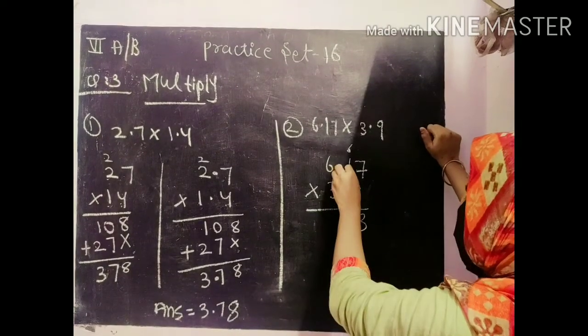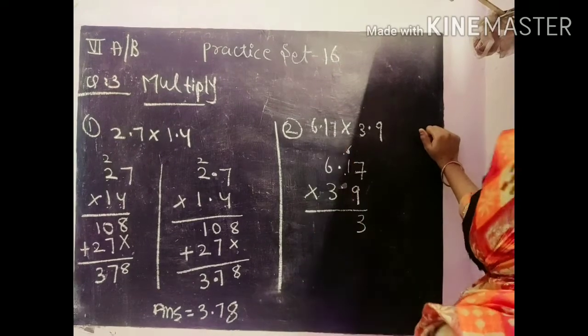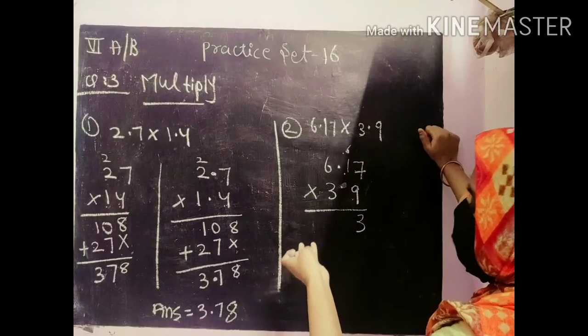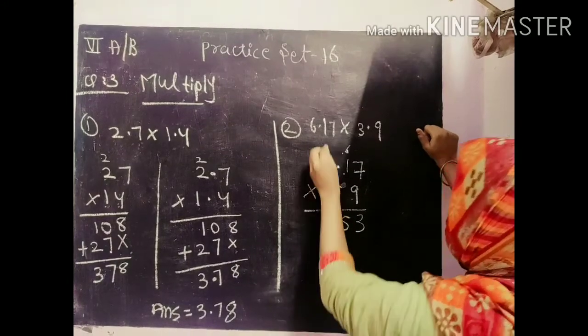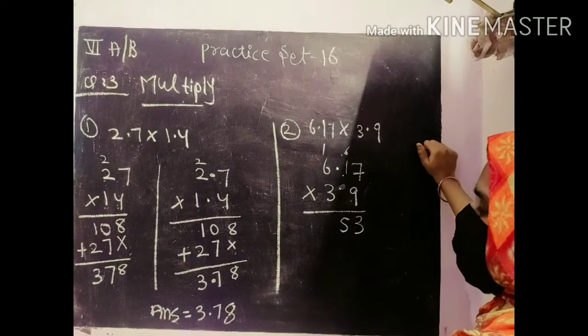9, 1's are 9. 9 plus 6. 9, 10, 11, 12, 13, 14, 15. Here 5 will come. Then again 1 will come.